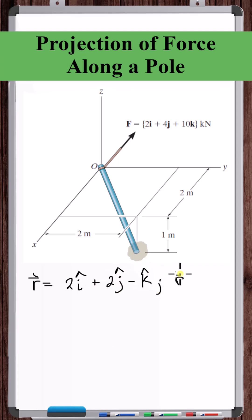Now get the magnitude of this position vector. Four plus four plus one, square root of nine is three. Now divide the vector by the magnitude to get a unit vector in the direction of the pole.